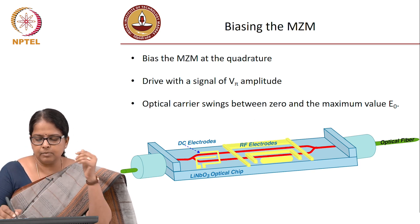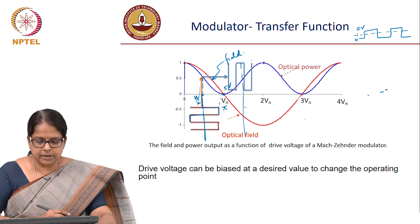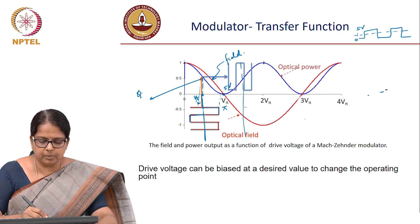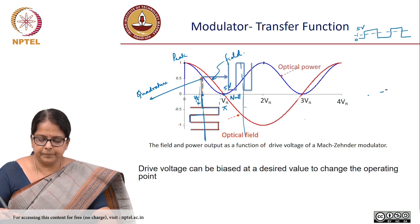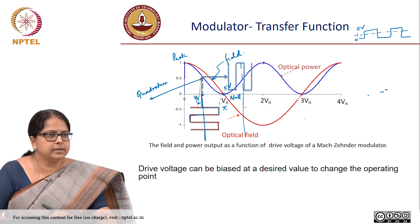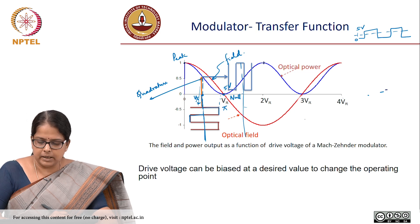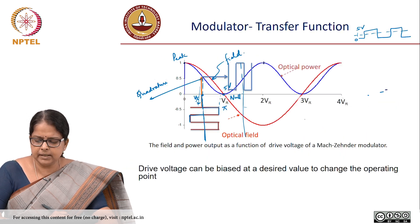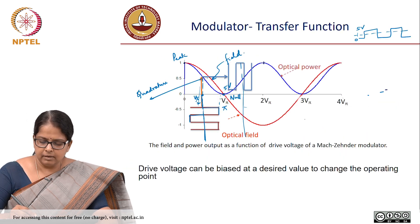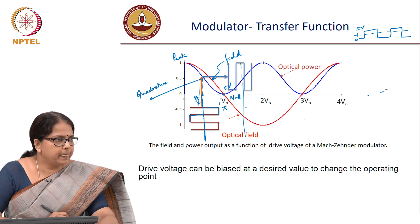You bias the Mach-Zehnder modulator at the quadrature. This point is called the quadrature point. This is your peak point and this is your null point of your modulator. You bias it at the quadrature and drive the signal with almost Vπ amplitude.